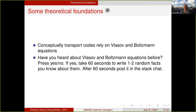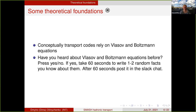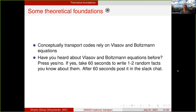One random fact: there is a postdoc who has never heard of the Boltzmann equation — fine, it can happen. A random fact about the Vlasov equation is that it's used a lot in plasma physics and also in cosmology. It's not only in heavy ion collisions where it's popular — when people build a tokamak or stellarator, the Vlasov equation is their bread and butter. This is also one of the comments on Slack: the Vlasov equation is used in plasma physics.